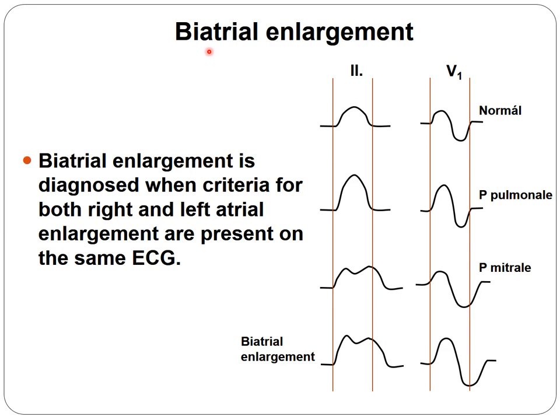We can have biatrial enlargement when both the right and left sides are enlarged. In this case, both criteria for right and left atrial enlargement are present. In lead II we have a taller and notched P wave, while in V1 both the initial and terminal phases are deeper and the overall wave is wide.